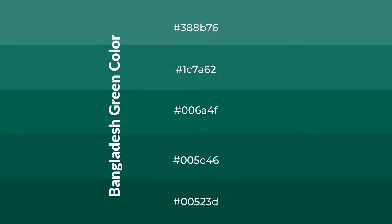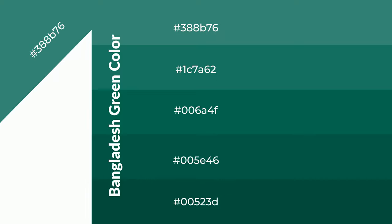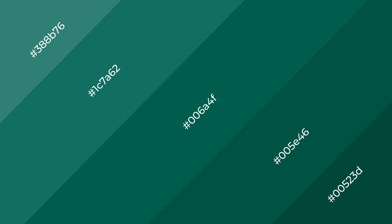To generate shades of a color, we add black to the color, and it is used in patterns, 3D effects, and layers. Shades create depth and drama.